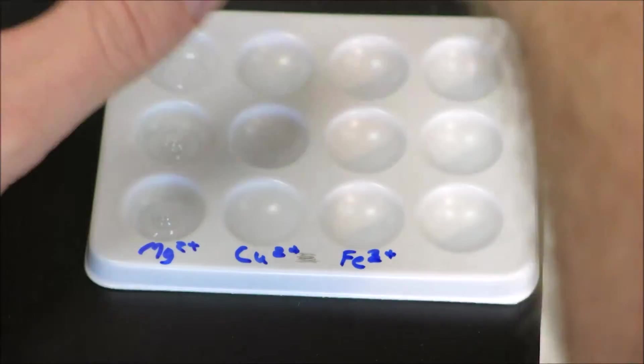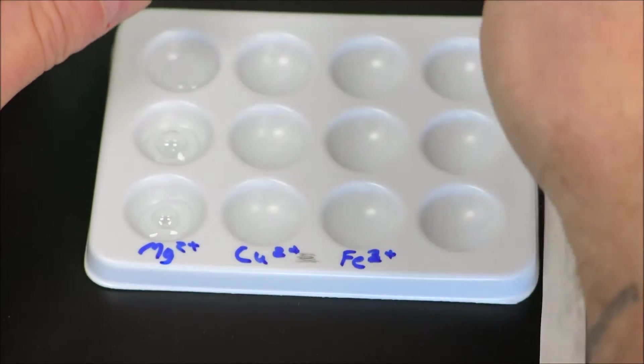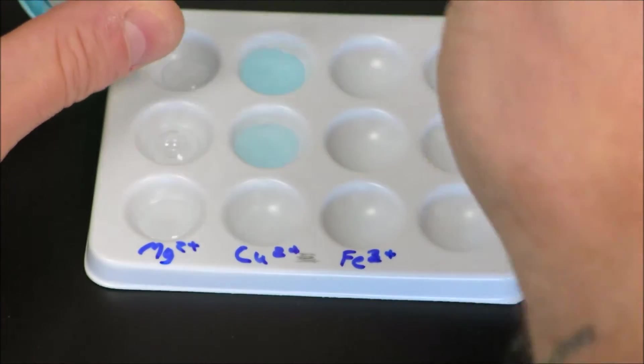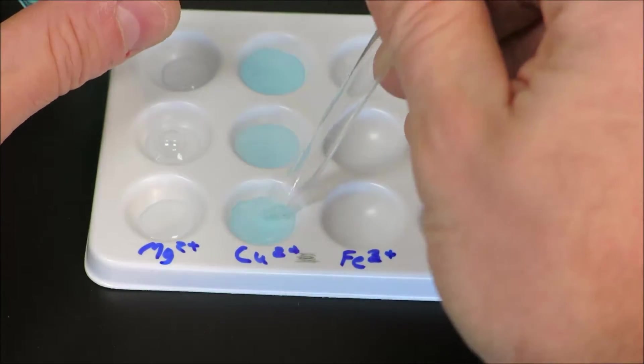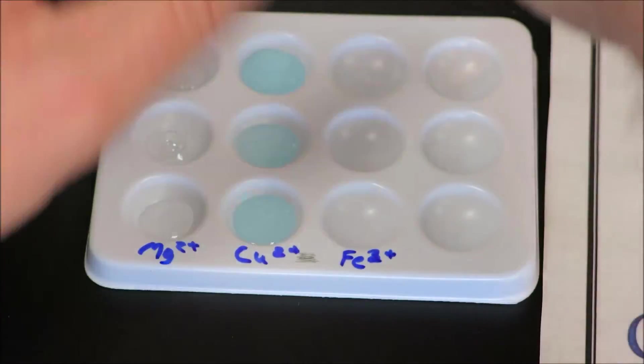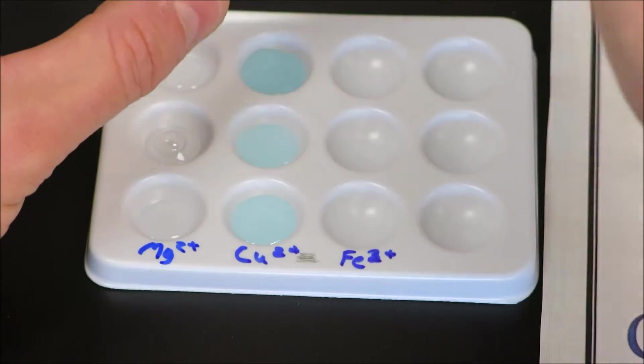And in our second column of wells, we'll place our copper two ions. Nice blue color. And in our third column of wells, we'll place our iron two-plus ions.